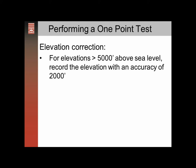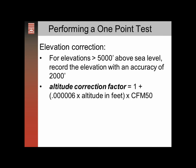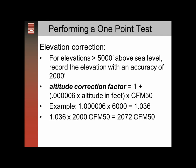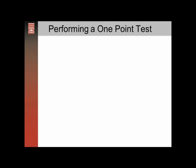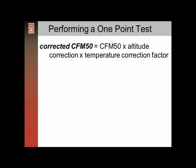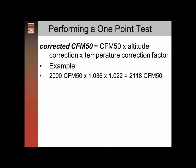For elevation correction, if you are more than 5,000 feet above sea level, you have to do the altitude correction. You need to record the altitude with an accuracy within 2,000 feet. Here is the formula for the correction factor: 1 plus 0.506 times the altitude in feet. Multiply that by the CFM at 50. For example, at 6,000 feet, you'll end up with 2072 CFM at 50.